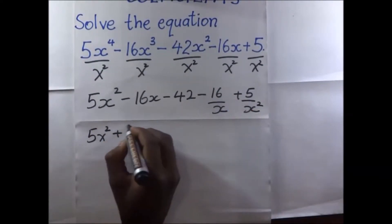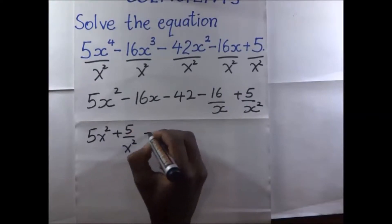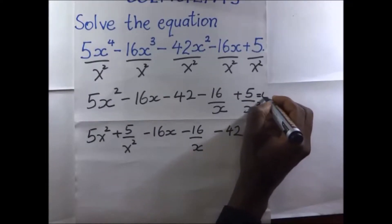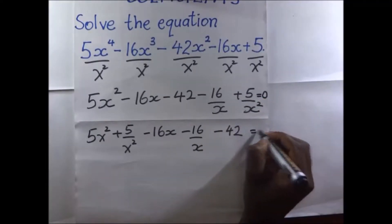5x plus 5 over x squared... We equate this to 0, so this is also equal to 0.